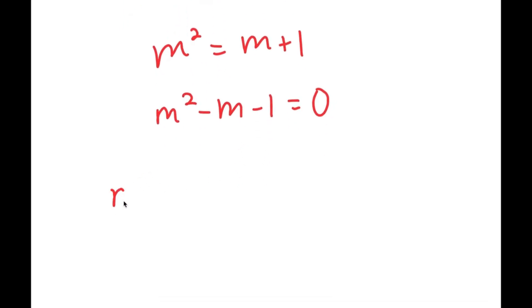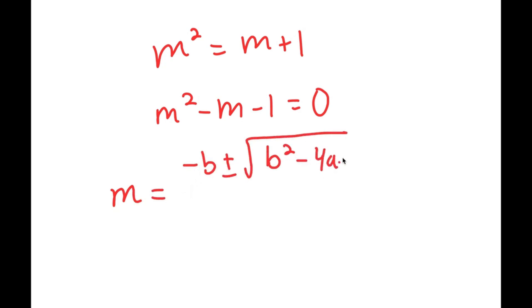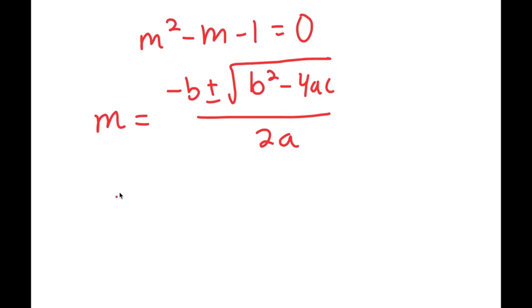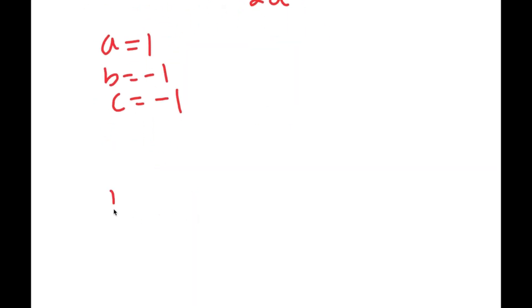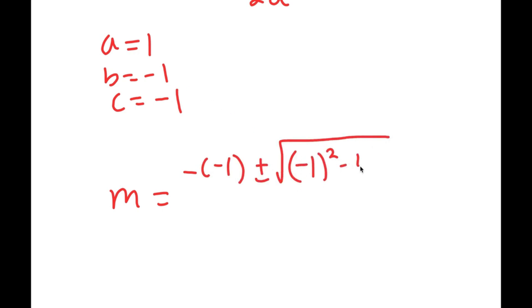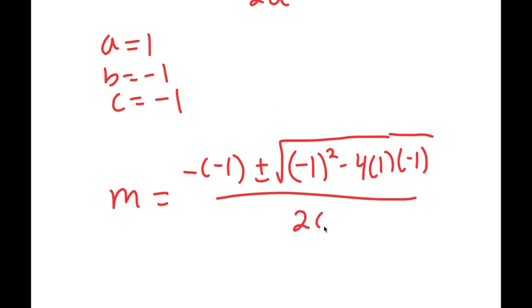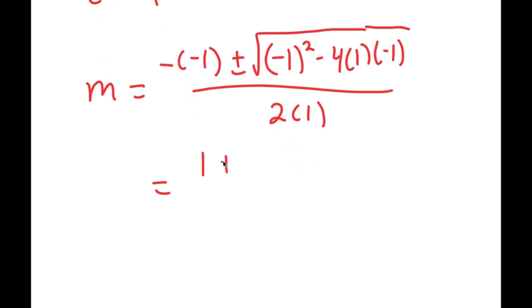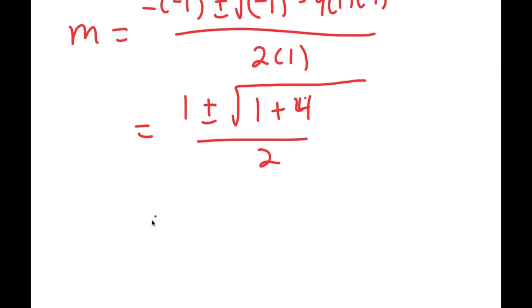I'm going to use the quadratic formula to solve this. The quadratic formula is negative b plus or minus the square root of b squared minus 4ac all over 2a. In this case, a is 1, b is negative 1, and c is negative 1. So I get m is equal to negative of negative 1 plus or minus the square root of negative 1 squared minus 4 times 1 times negative 1, all over 2 times 1. This turns into positive 1 plus or minus the square root of 1 plus 4 over 2, which is equal to 1 plus or minus the square root of 5 over 2.